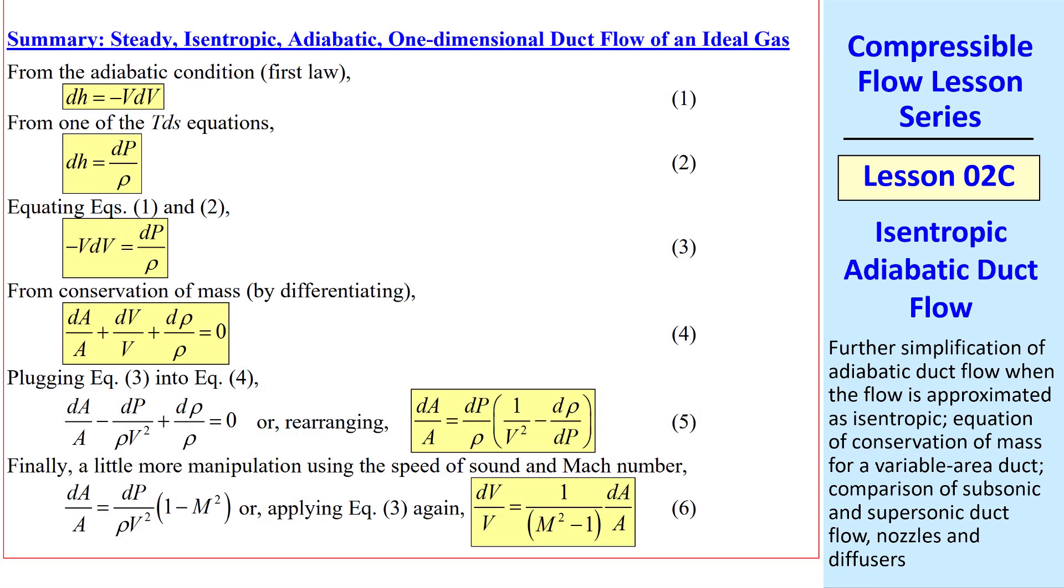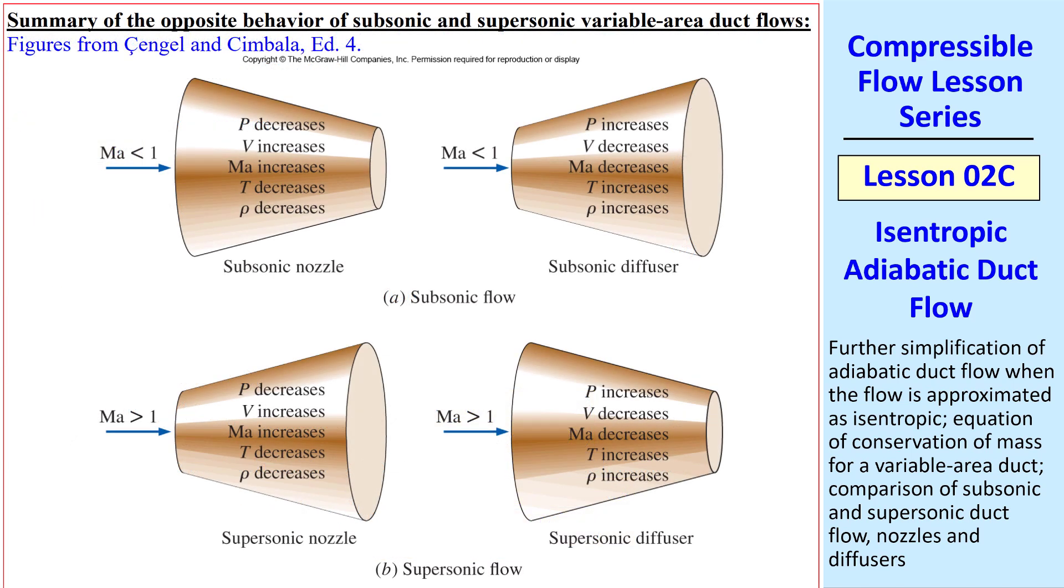Here's a quick summary of all the equations we used in this lesson, 1 through 6. And this equation is the key to understanding the relationship between speed and area. Because when M is less than 1, this is negative. But when M is greater than 1, this is positive. I summarize with a figure that comes from my textbook, noting that we use MA instead of M in the textbook. We're talking about subsonic flow in the first row, and supersonic flow in the second row here.